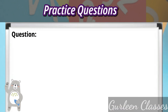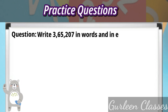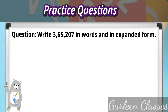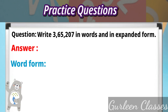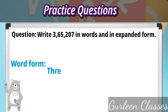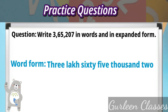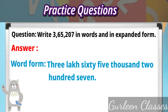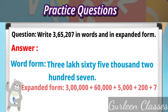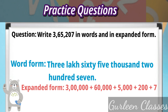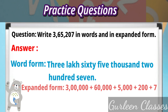Next question: write 365,207 in words and in expanded form. Word form: as we read it. Expanded form: 300,000 plus 60,000 plus 5,000 plus 200 plus 7.